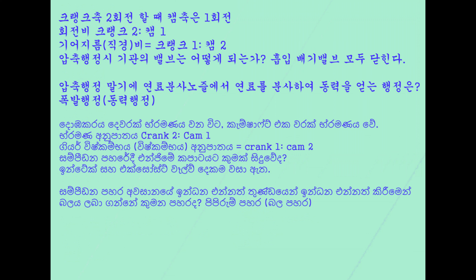크랭크축이 2회전할 때 캠축은 1회전합니다. 회전비는 크랭크 2 대 캠 1입니다. 기어 지름(직경) 비는 크랭크 1 대 캠 2입니다.